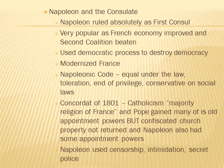The Consulate was formed with Napoleon, who ruled absolutely as the First Consul. He was very popular as the French economy improved and the second coalition was beaten. He used democratic processes to essentially destroy democracy. He modernized France, established the Napoleonic Code or Civil Code, created equality under the law, toleration, the end of privilege, but was conservative on social laws. The Concordat of 1801 established an agreement with the Pope — Catholicism was the majority religion of France, the Pope regained many appointment powers, but confiscated church property was not returned and Napoleon also held some appointment powers. Napoleon used censorship, intimidation, and the secret police to maintain his dictatorship.